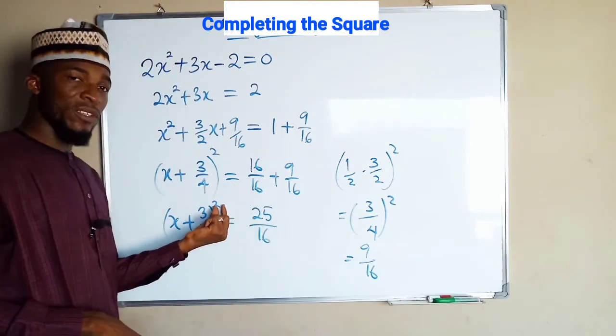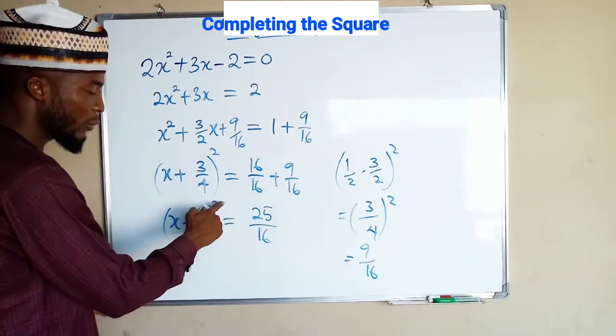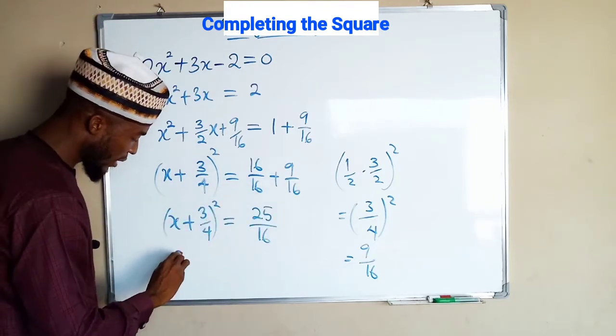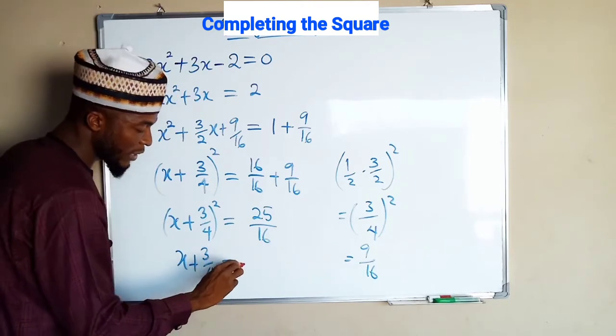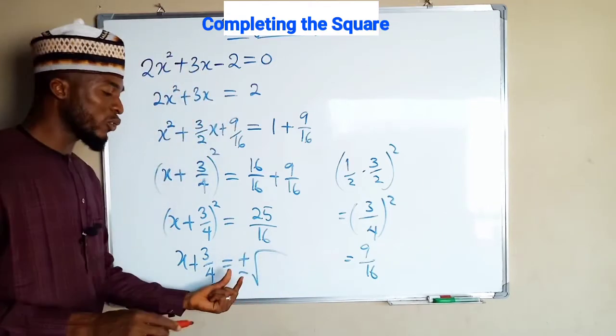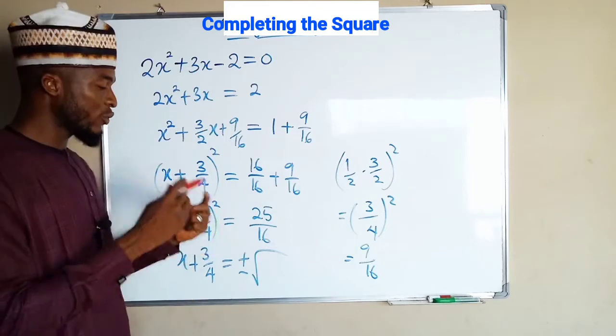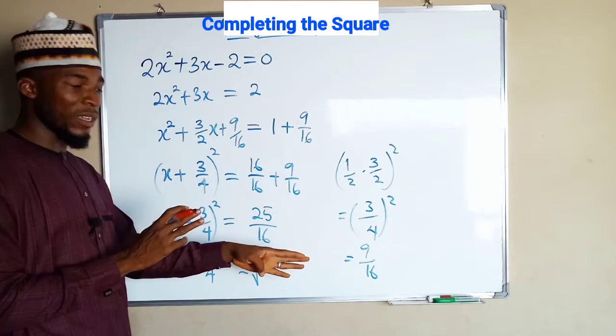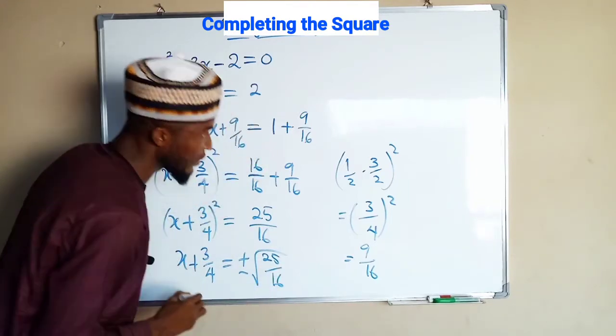Now to get rid of this square we are going to take the square root of both sides. Taking the square root of the left-hand side will cancel this square, leaving x plus 3 over 4. And to the right-hand side we are going to attach plus or minus, because we are now introducing square root to a number that doesn't have a square root in an equation from left-hand side to right-hand side. Square root of 25 over 16.